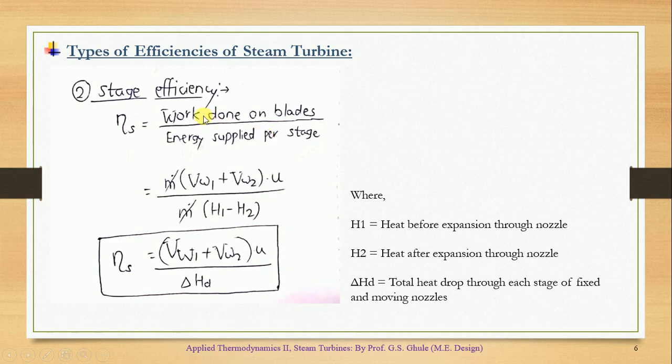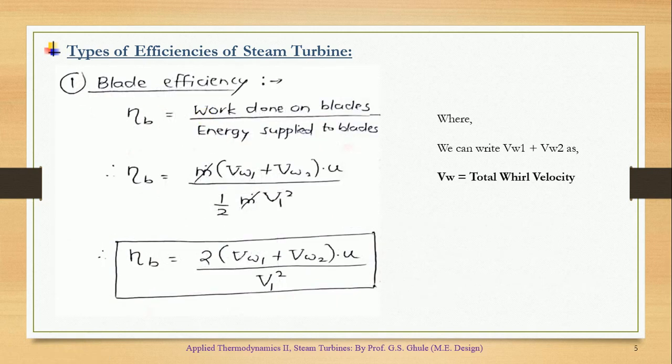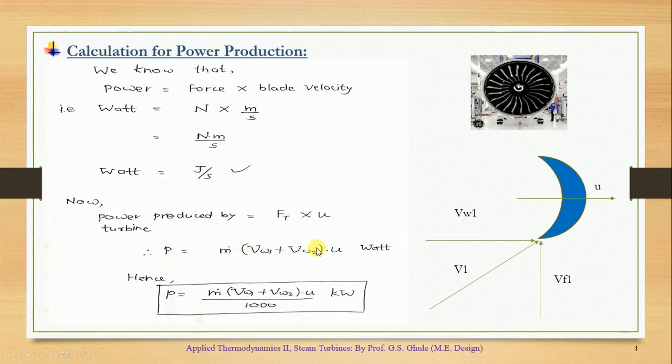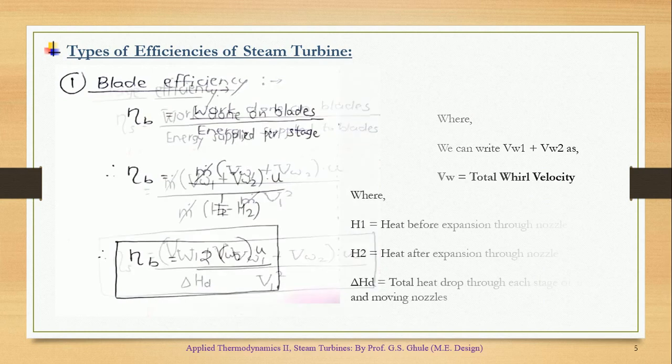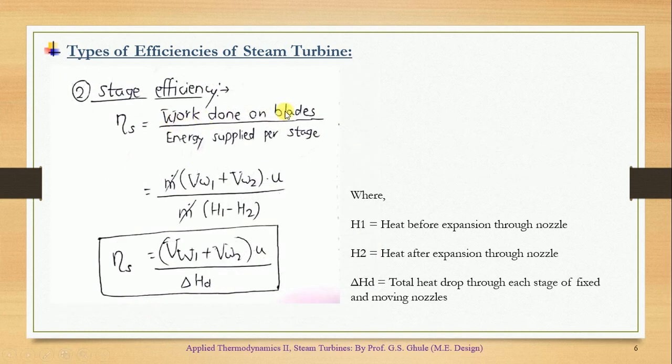As we know in earlier case, in case of blade efficiency, we have studied the formula for work done, which is this. We have derived this particular formula from power, which is in terms of watts, which is nothing but work done per second. Work done per second is in terms of joules per second, which is nothing but watt. So ultimately, if I say power in terms of watt, that is nothing but my work done on the blades.